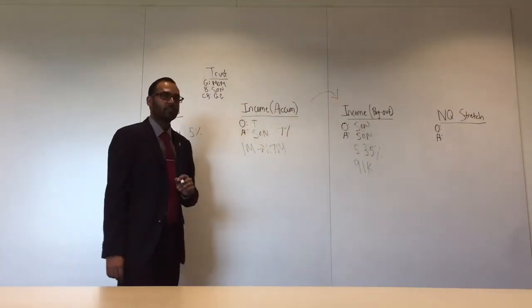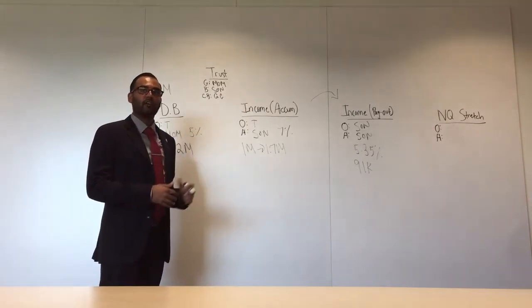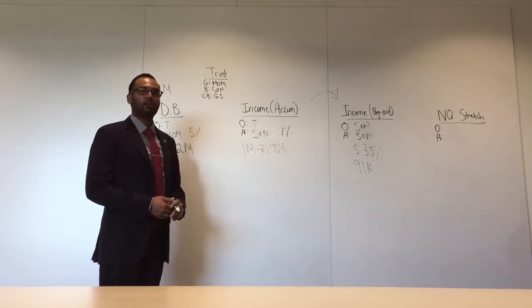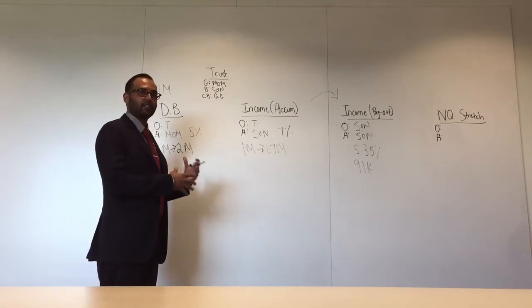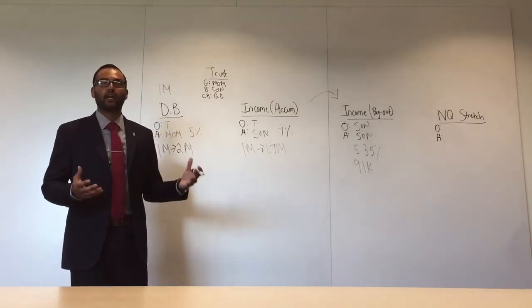That's a 9.1% distribution on the original million dollar investment that you're going to create a stream of income that the beneficiary can't outlive. Think about the power of passing assets over an entire generation but also creating a stream of income that the clients can't outlive.